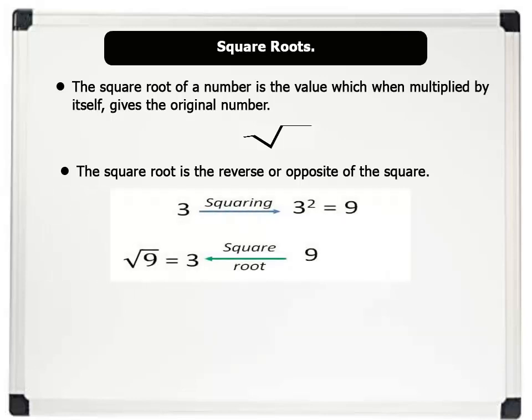For example, when we square the number 3, it gives us 9. Now, to find the square root of 9, we think of a number that can multiply itself 2 times to give 9. And that number equals 3. So, the square of 3 is the reverse of the square root of 9.